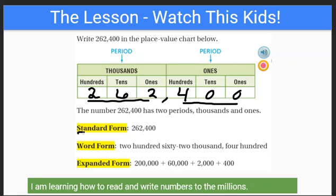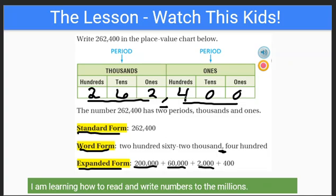You can write it in three different ways. Standard form is the one that's nice and easy: two hundred sixty-two thousand four hundred. Word form is kind of difficult because there's a lot to spell: two hundred sixty-two thousand — notice the comma is the same as in the number — four hundred. And expanded form is digit by digit: two hundred thousand, sixty thousand, two thousand, four hundred. There are no tens and no ones, so we don't have to write them.